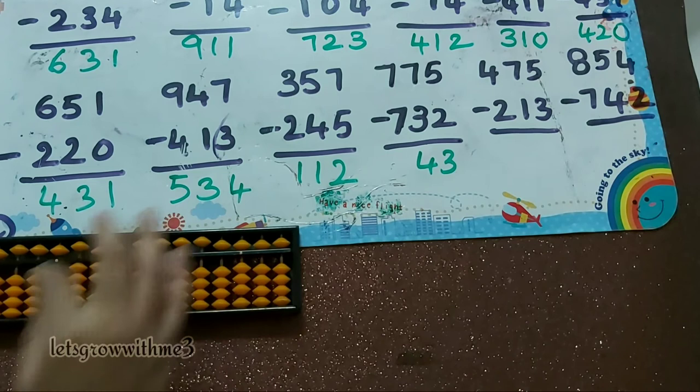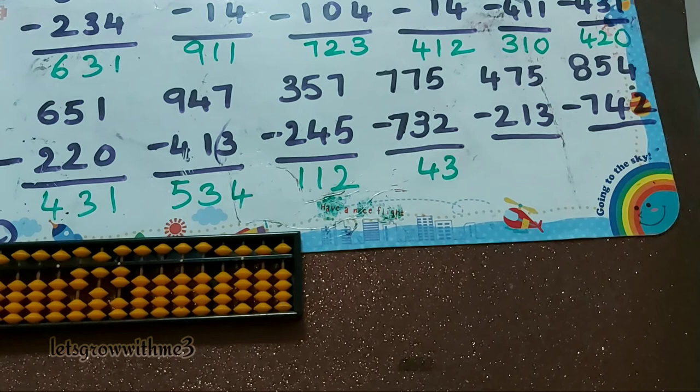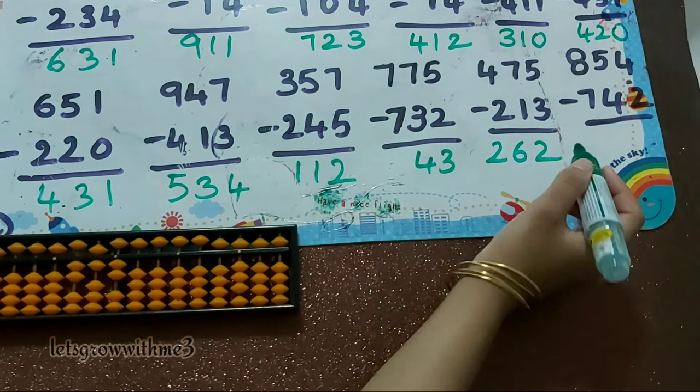475 minus 213: minus 2, minus 1, minus 3 — minus 5 plus 2. So the answer is 262.